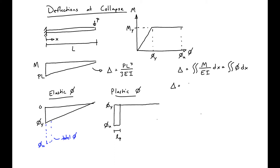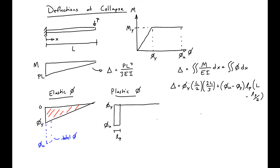Our deflection is then equal to phi_Y times L over 2 — which is the area — times the distance from the end to the centroid of that triangle, two-thirds L. Plus phi_ultimate minus phi_Y times LP times L minus LP over 2, and this is just the area of this times the distance from the centroid to the end.